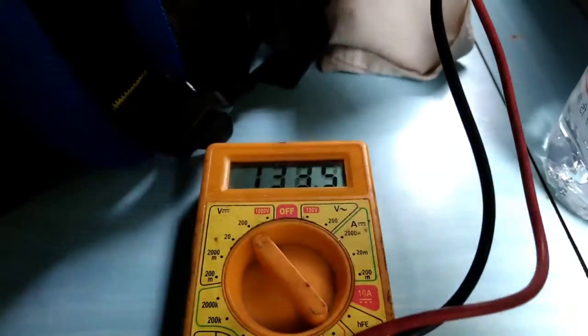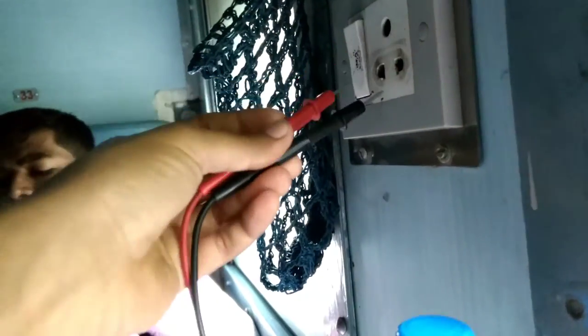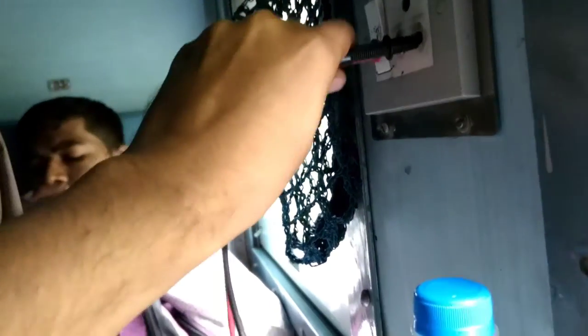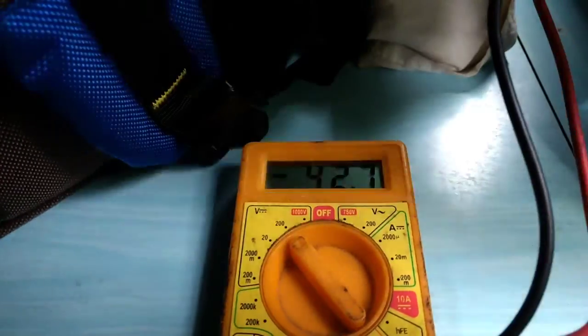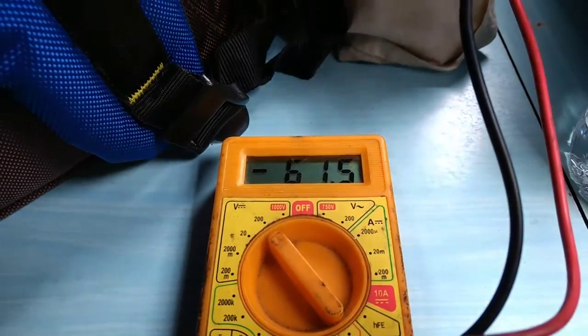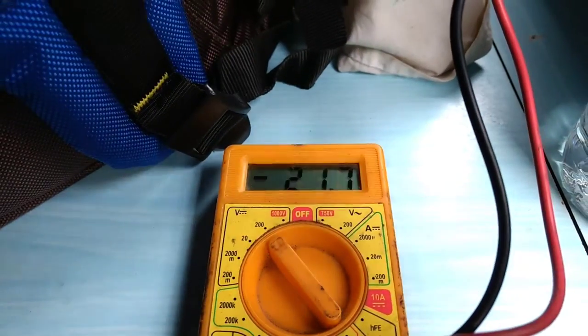In order to confirm whether it's DC or not I will change the terminal of the voltmeter to see the sign variation. Now I have altered the port. Now you can see a clear minus sign and the voltage reading. That means it is DC current. DC voltage is there.